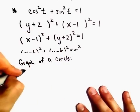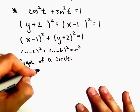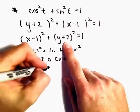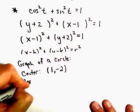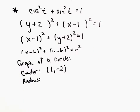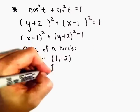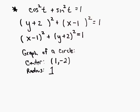The graph of a circle with a center at positive 1 and negative 2 and with a radius. Again, we take the square root, but this will just be a square root of 1. So the radius will equal 1.